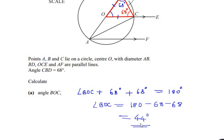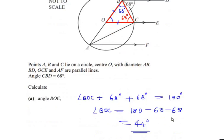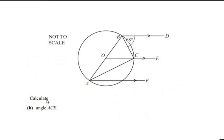So we have found angle BOC as 44 degrees. Now let us look at part B of this question: calculate angle ACE, so we have to find the angle ACE.